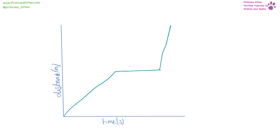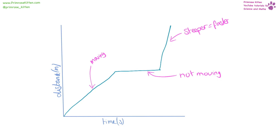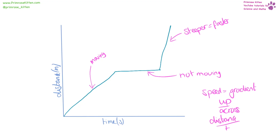Distance-time graphs tell us lots of information. If we have a slope that is increasing, we are moving, and the steeper the slope, the faster we are moving. If it is a flat line, it is not moving — as time increases, our distance is not increasing. We can calculate speed as the gradient, which is up over across, i.e. distance over time.